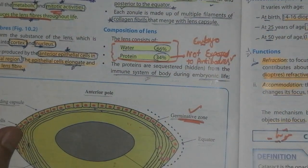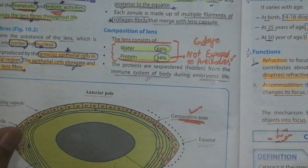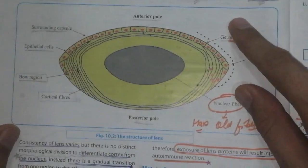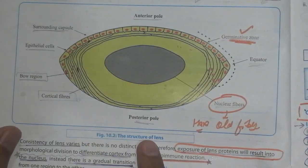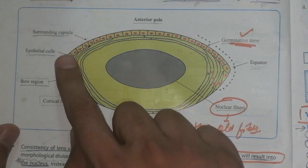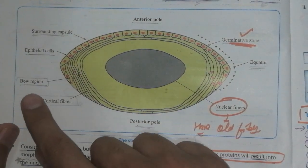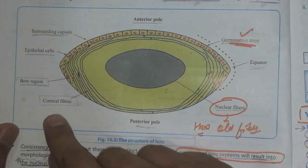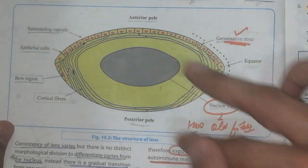What is the structure of the lens? Here is today's most important diagram: surrounding the capsule, epithelial cell, Bow's region, cortical fiber, posterior pole, anterior pole, germinative zone, equator, and nuclear fiber.